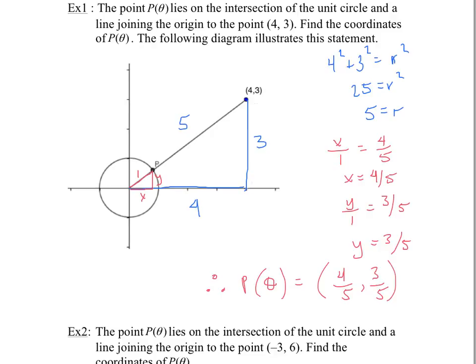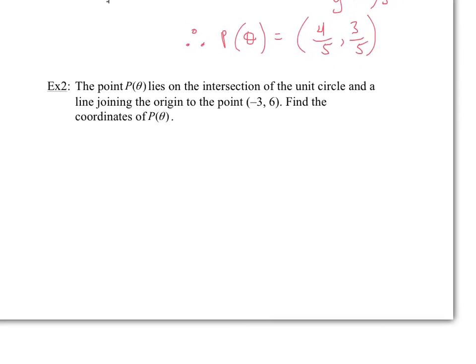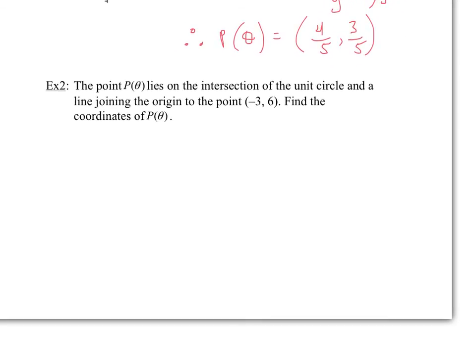Now without a diagram, let's repeat with the point negative 3, 6. That point is in the second quadrant since x is negative and y is positive. The line from the origin through negative 3, 6 intersects the unit circle — we want those intersection coordinates. First, find the hypotenuse of the larger triangle: 6 squared plus negative 3 squared equals r squared, so 36 plus 9 equals 45, giving r equals square root of 45.